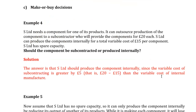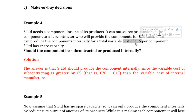Let's now move to the third decision: make or buy. S Limited needs a component for one of its products. It can outsource production to a subcontractor for £20 each, or produce it internally for a total variable cost of £15 per component. S Limited has spare capacity, meaning no additional fixed costs are incurred. Since internal cost £15 is less than external price £20, the decision is to produce the component internally.